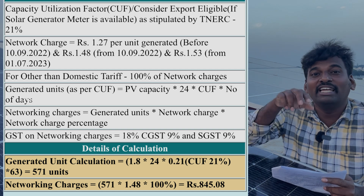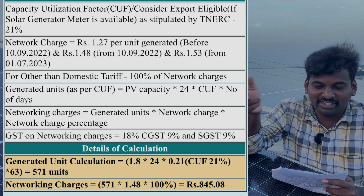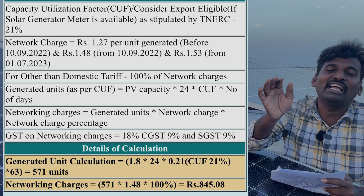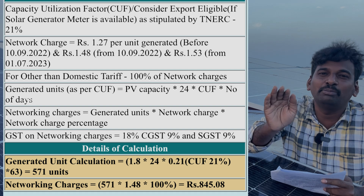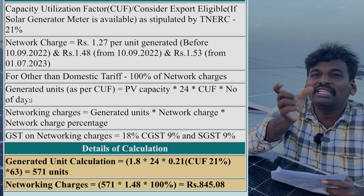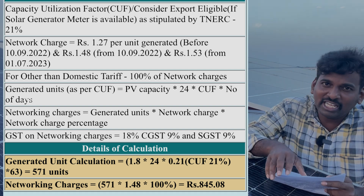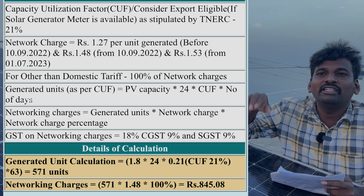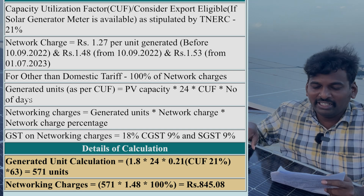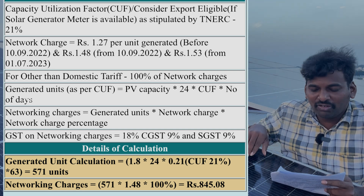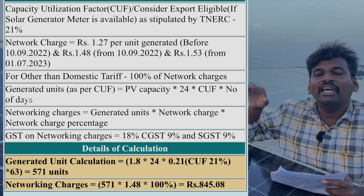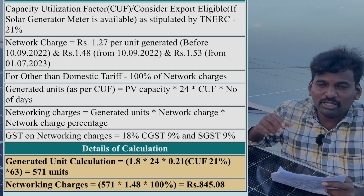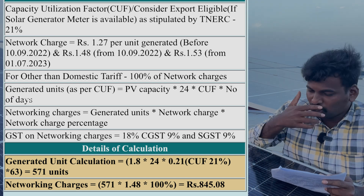If you ask whether the export is eligible — if there is an export — if you have 60 units, you will have to cut a commercial cost. This will be cut down. Let's look at the commercial solar panel.